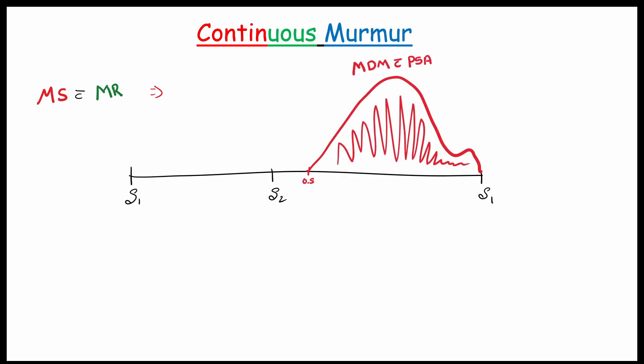Okay, now we will see the continuous murmur. Before that, I want to ask a question with you guys. Let's assume a patient having a mitral stenosis with mitral regurgitation. In this case, we can see pansystolic murmur due to mitral regurgitation and mid-diastolic murmur with presystolic accentuation due to mitral stenosis. So if you see here, the murmur happening in both systolic and diastolic phase, will it be a continuous murmur?